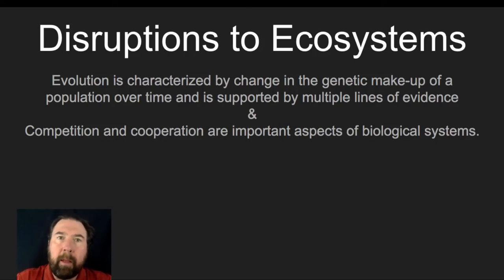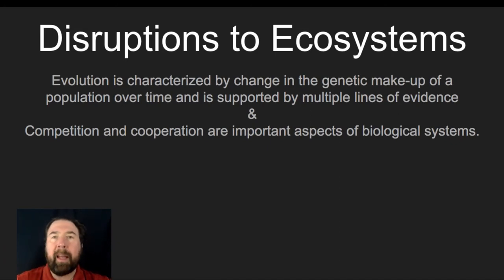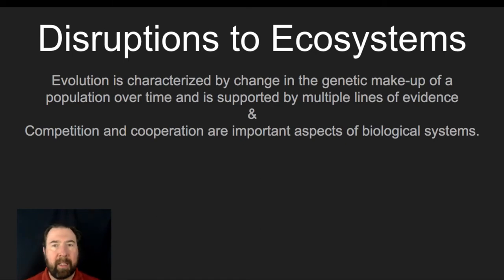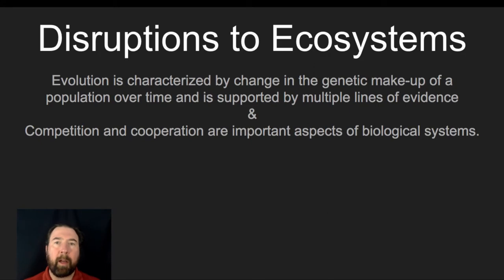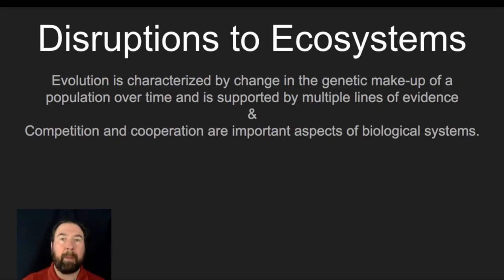Hi everybody, it's Mr. Matthew here and in this video we're going to talk about disruptions to ecosystems. Specifically we're going to talk about how evolution is characterized by changes in the genetic makeup of a population over time, how that's supported by multiple lines of evidence, and how competition and cooperation are important aspects of biological systems. We're going to talk about the conditions that exist within populations and how disruptions influence the shifts of those populations.